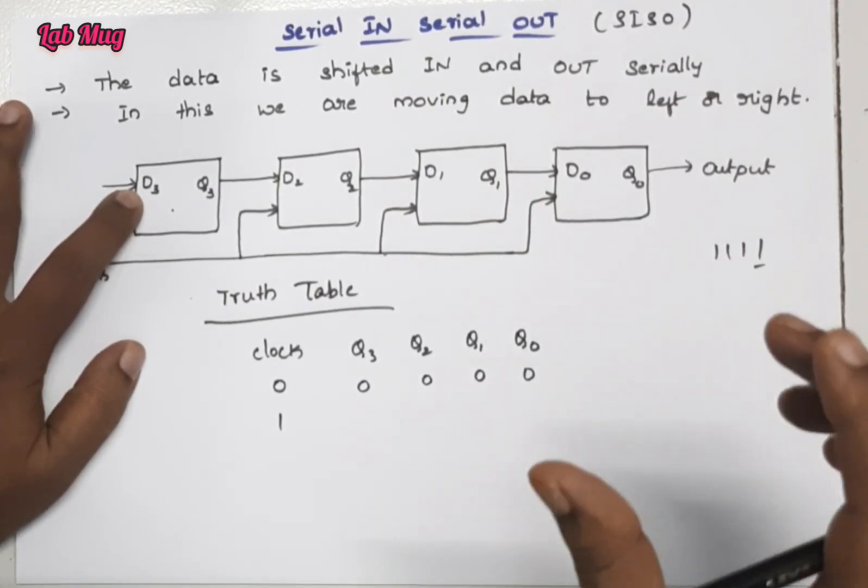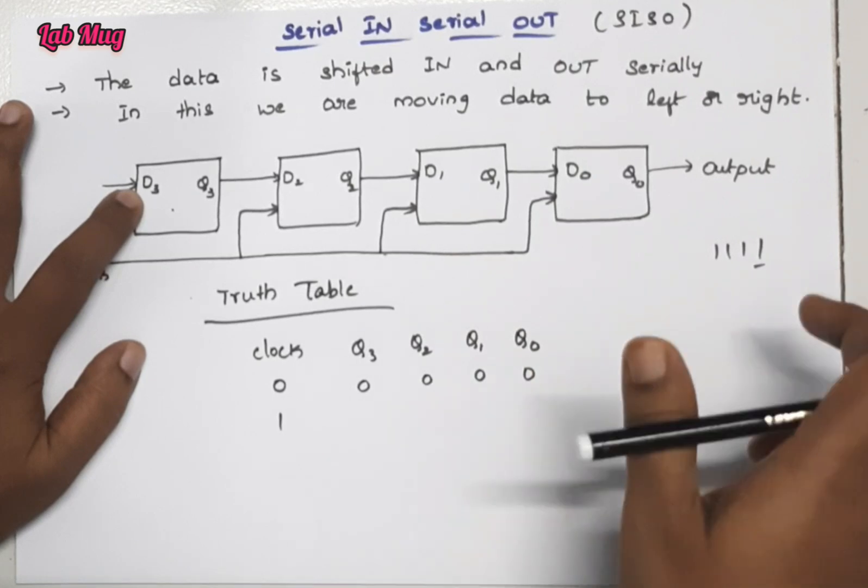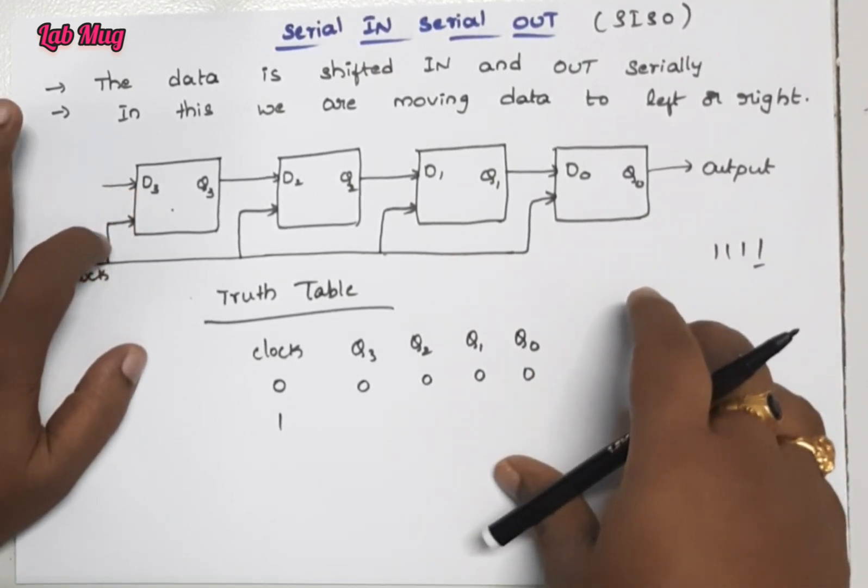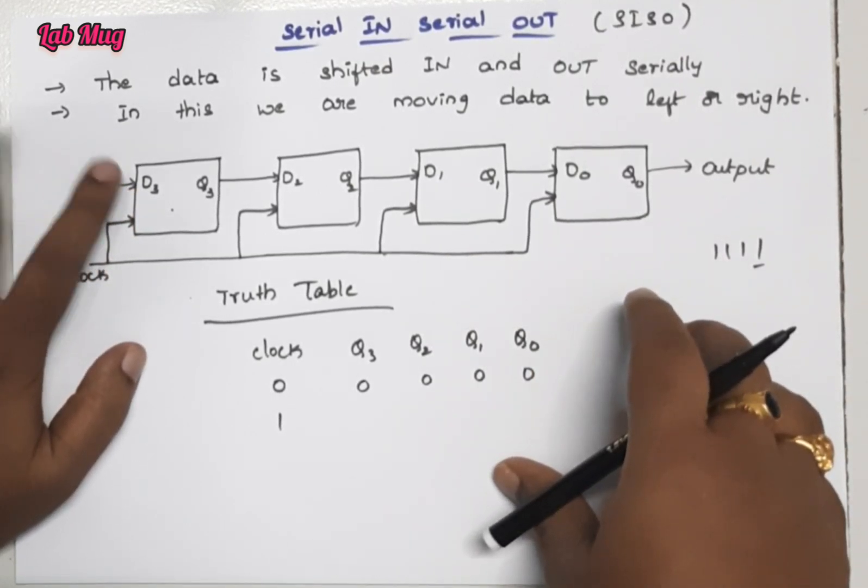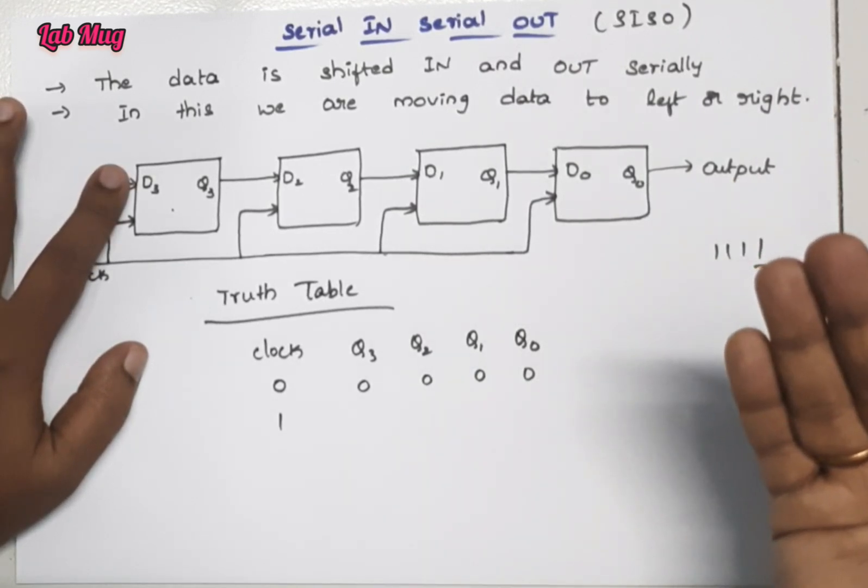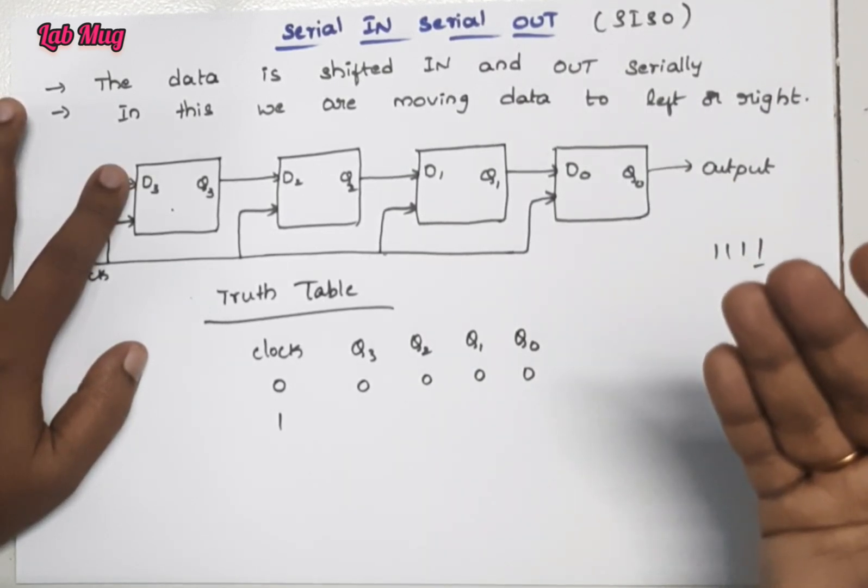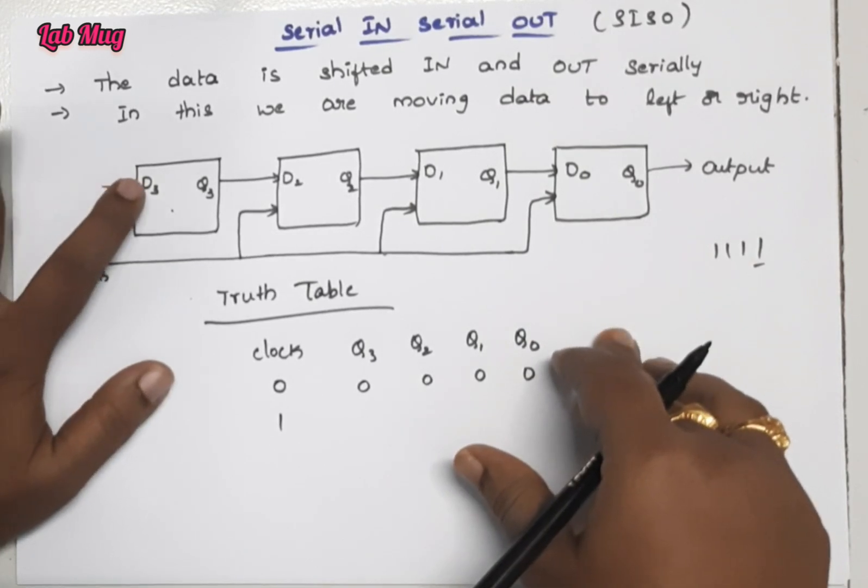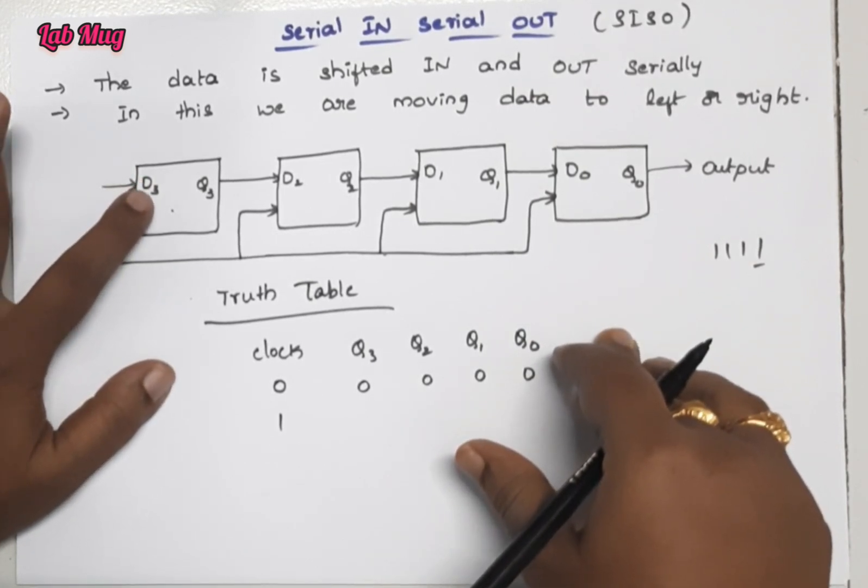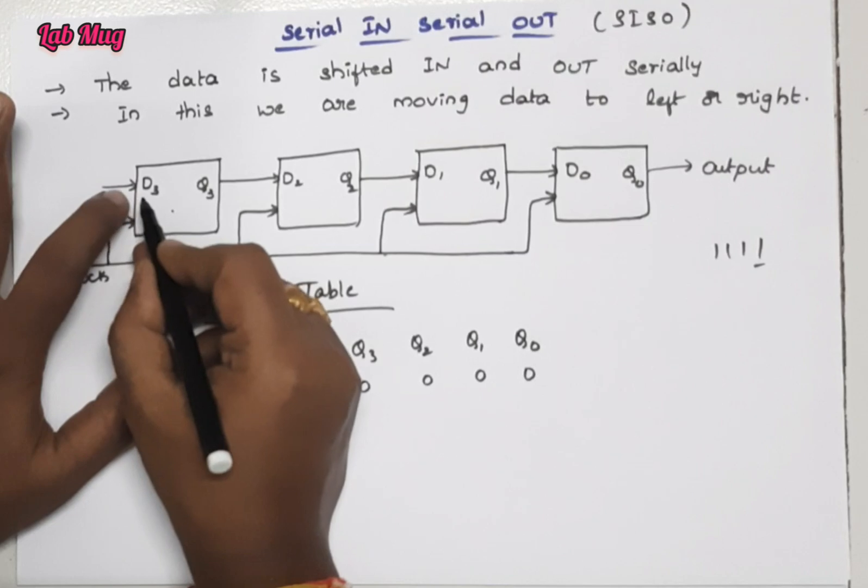Then the D3 flip-flop gives the input as data. We are using D flip-flop because D flip-flop has only one input. The other input is the clock. When one input is there, that same output we get. That's why we use D flip-flop for simplicity.